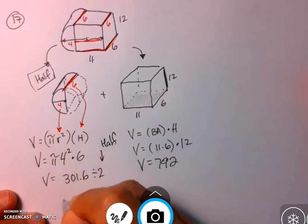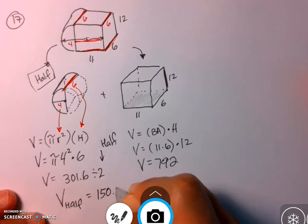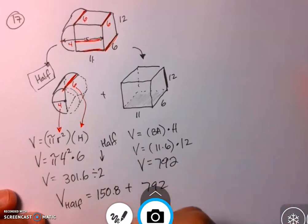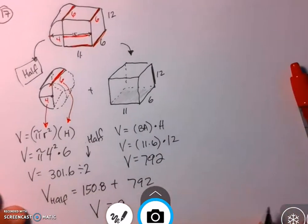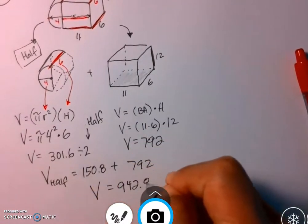And then once I divide by 2, the volume of half of it will be about 150.8. We're going to add it with this 792, and the entire thing of the whole composite is 942.8.